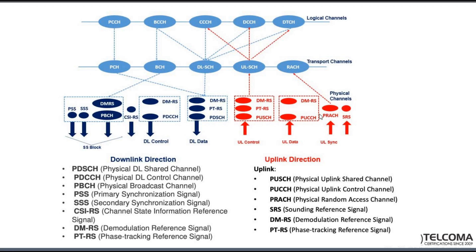The uplink also has PRACH for initial access and SRS (Sounding Reference Signal), as discussed earlier. The UE uses SRS to send reference signaling to the gNodeB, and this can be enabled or disabled as per requirement.